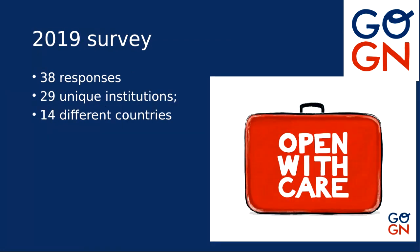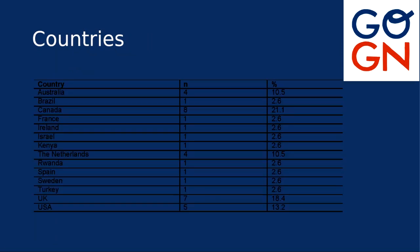We conducted a survey last year asking members a number of different things. We had 38 responses from 29 institutions across 14 different countries, and I think that's quite representative of the network as a whole. Looking at where members are from: quite a lot of Canadians — those Canadians pop up everywhere — quite a lot based in the UK and the US. There are four in the Netherlands, for instance, though there's a distinction between where you're registered for your degree and where you're actually doing the study.